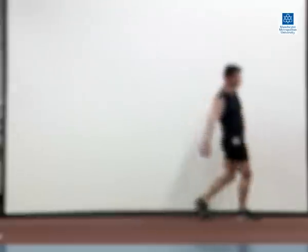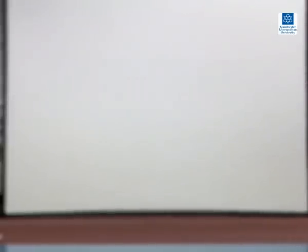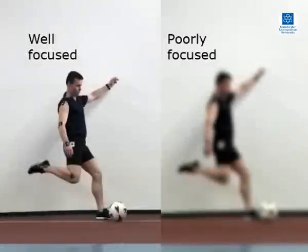This example shows the same field of view but with the image poorly focused. Comparing the well focused and poorly focused images highlights how difficult it would be to accurately locate joint centers in the image on the right.